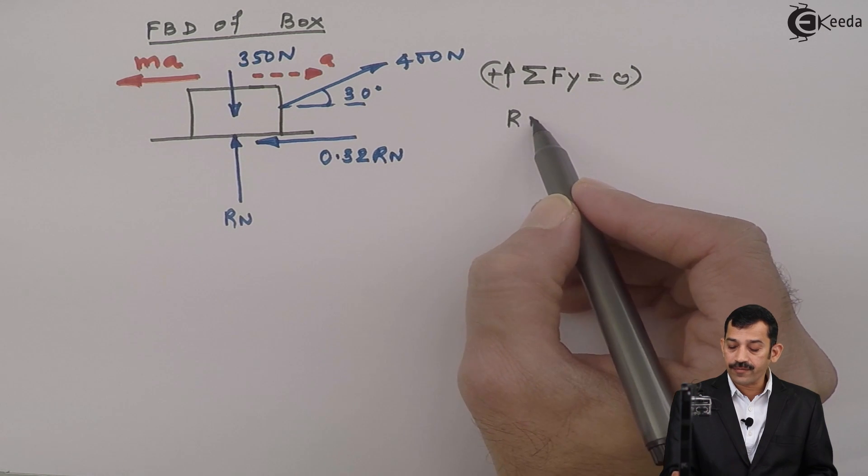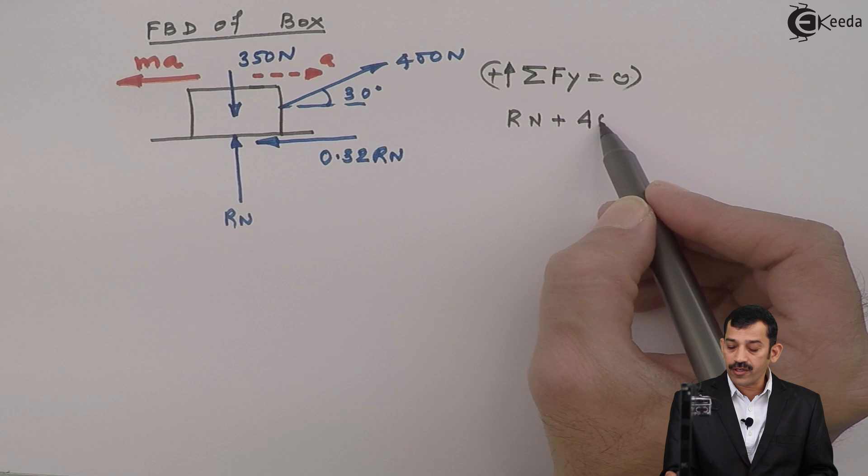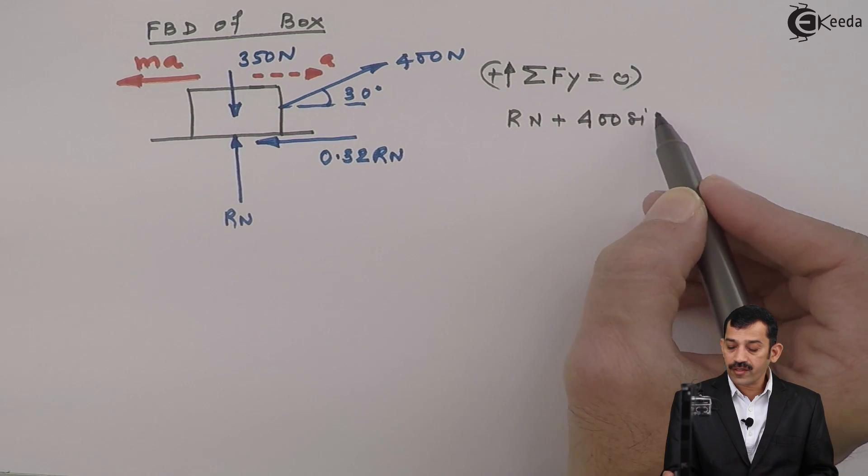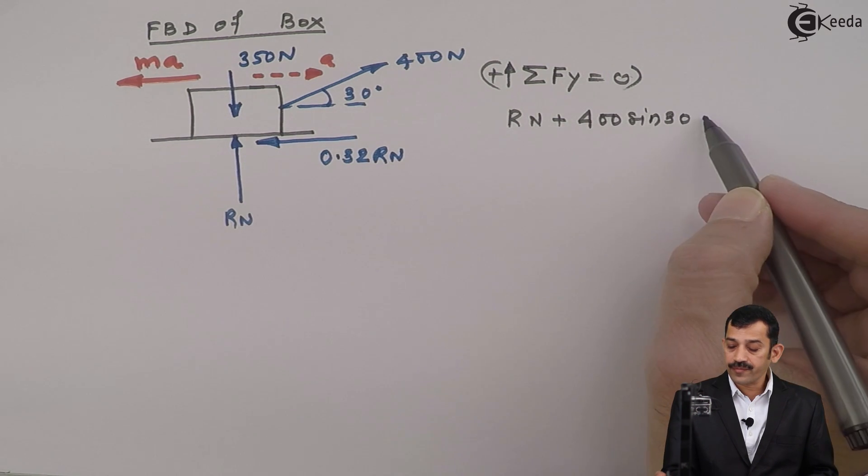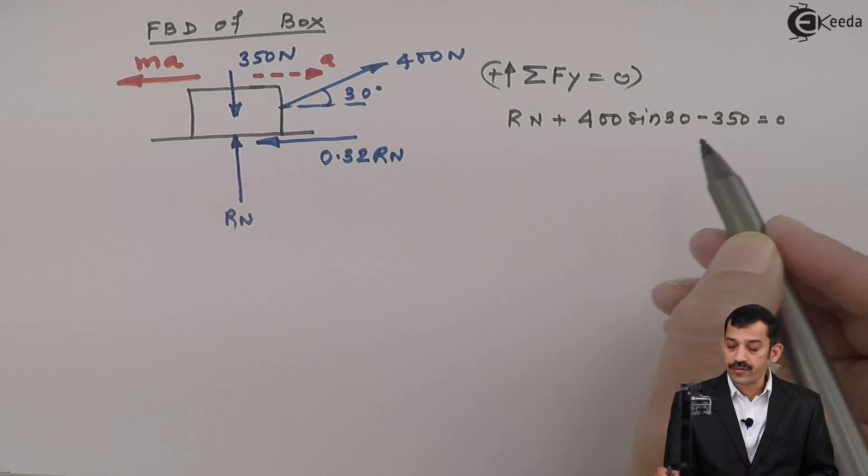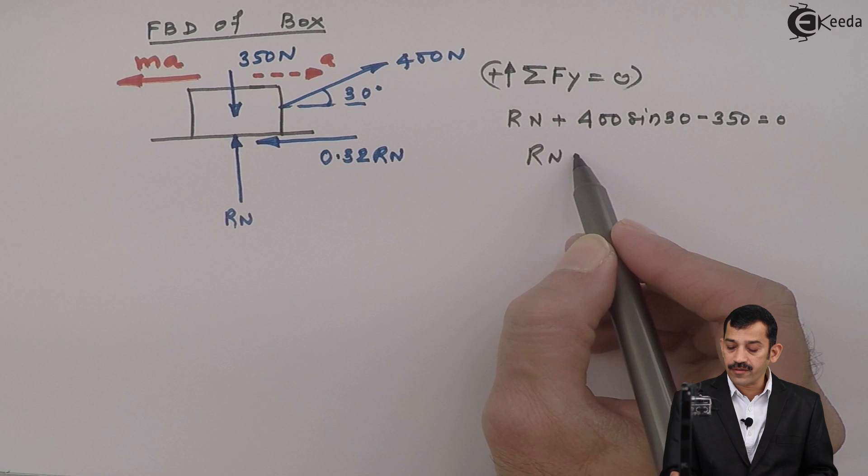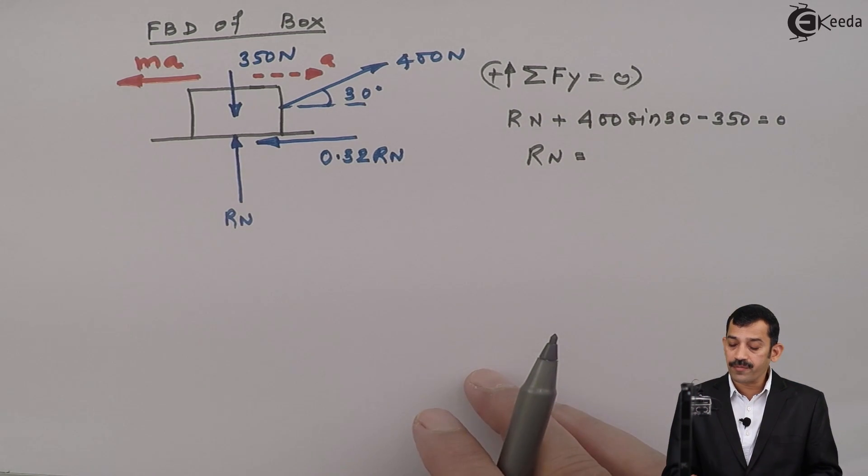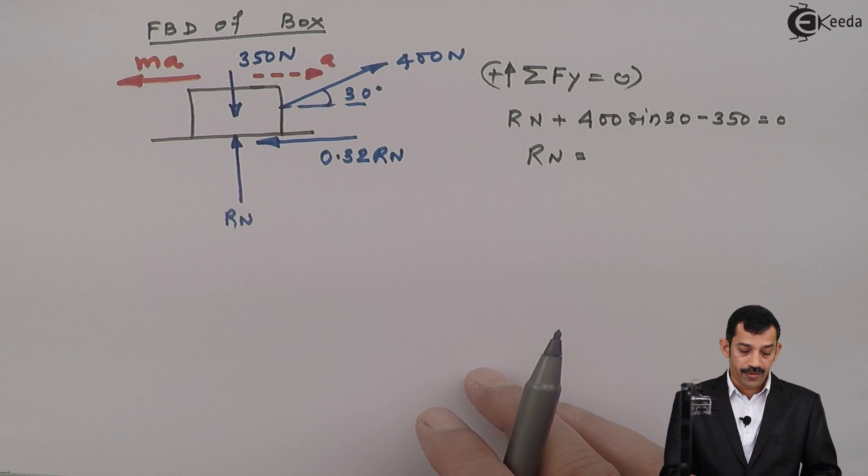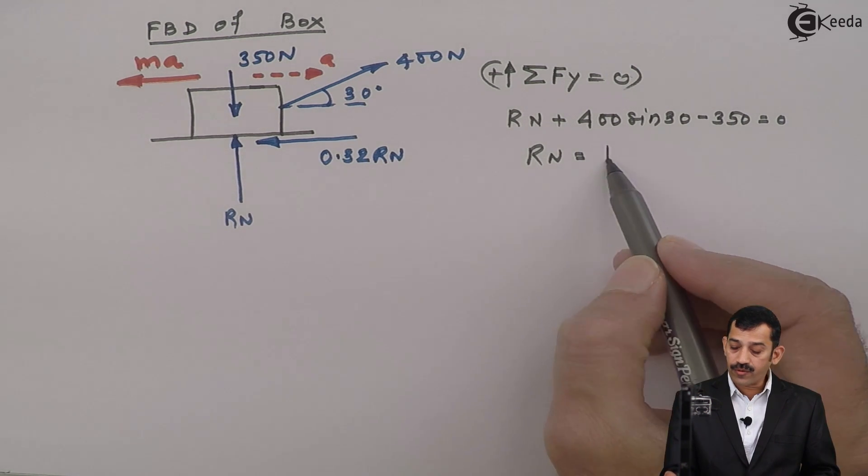Now what forces are acting here? First one is Rn. Next component of this 400 is what? 400 sin 30 minus 350 equal to what? 0. That means normal reaction comes out to be 350 minus 400 sin 30.